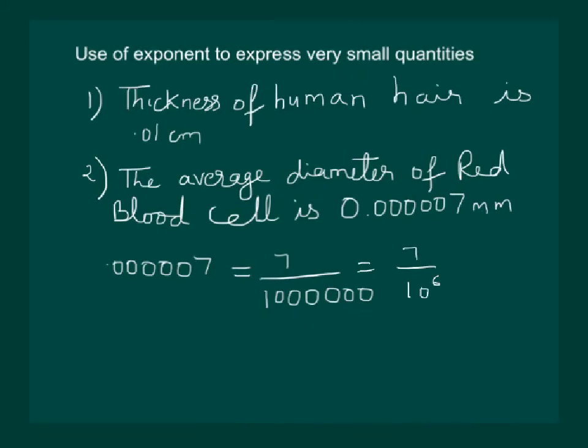This can be written as 7 by 10 to the power of 6. Now, this can be also written as 7 into 10 to the power of minus 6. We have to remember that a to the power of minus m is equal to 1 by a power m. About which we will discuss further.